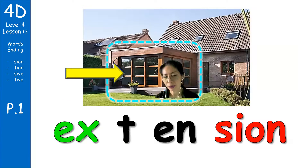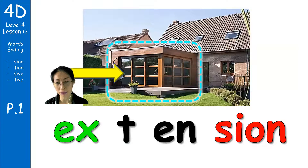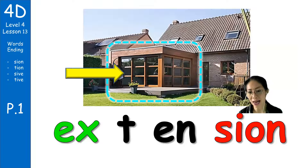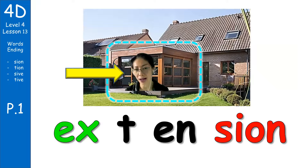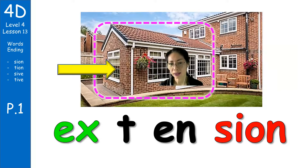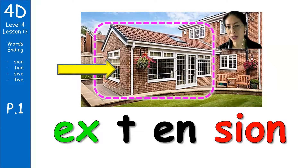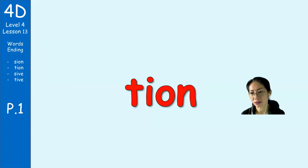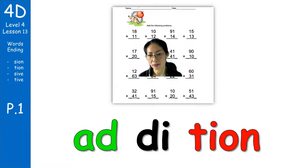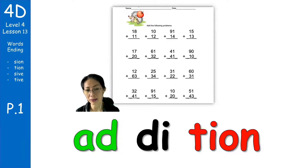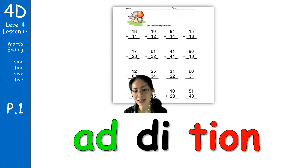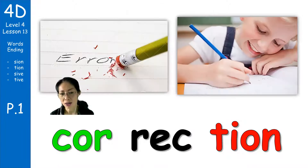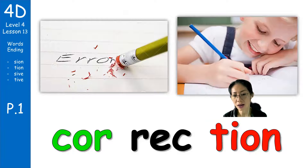Extension — to make your house big, to make it bigger. Extension. This part is the extension of the house. Here also — the extension before was just here. Extension, extension — T-I-O-N. Extension. In mathematics: add, add, addition. Addition. Correction, correction.